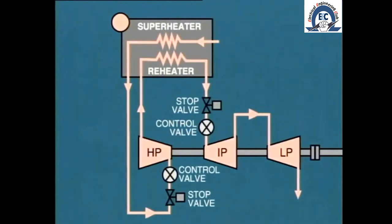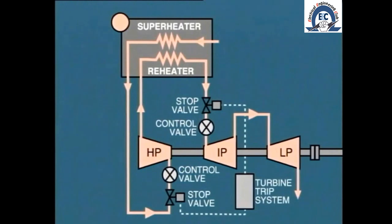On reheat turbines, an additional stop valve and control valve are located at the reheat steam entrance to the intermediate cylinder. We can see the arrangement here. The reheat stop valve functions in the same manner as the turbine main stop valve, and in fact, its operation is triggered by the same trip mechanism.